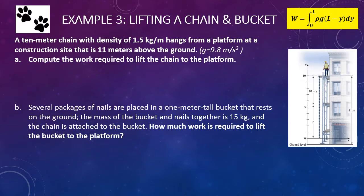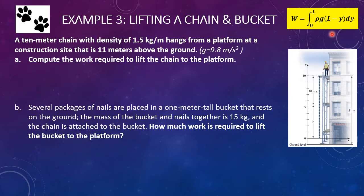Example 3: lifting a chain and bucket. A 10-meter chain with density 1.5 kilograms per meter hangs from a platform 11 meters above the ground. Compute the work required to lift the chain to the platform. In part B, several packages of nails are placed in a one-meter tall bucket resting on the ground; the mass of the bucket and nails together is 15 kilograms and the chain is attached to the bucket. How much work is required to lift the bucket to the platform? Use the lifting formula and see if you can solve both parts.